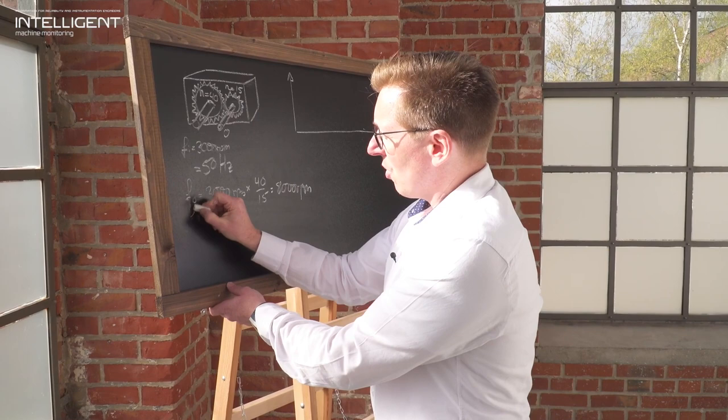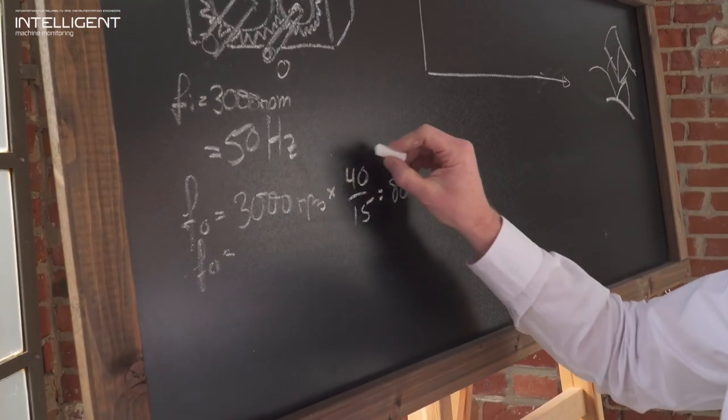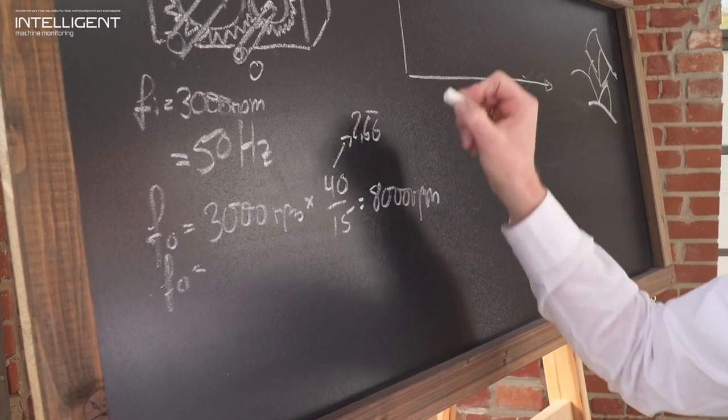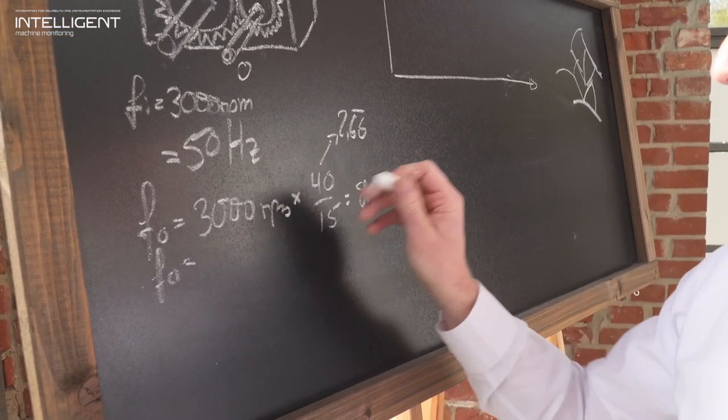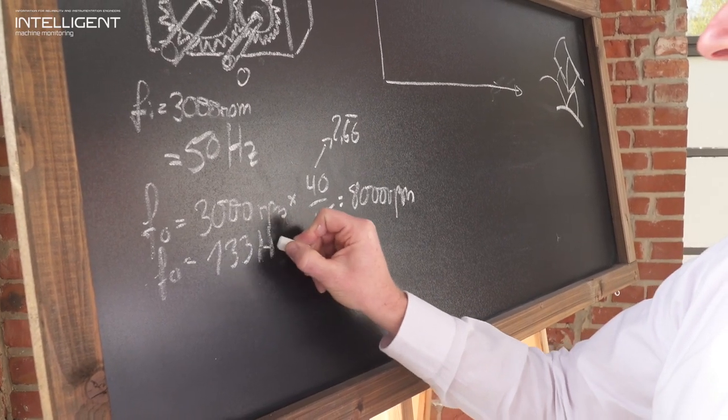8000 rpm is also equivalent to a 2.6 gear ratio, so this is equivalent to a 133 Hertz turning frequency.